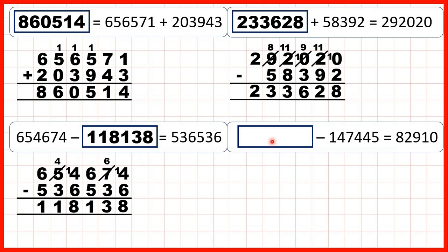Now, something minus 147,445 equals 82,910. So here we have a missing number subtraction, but this time it's the first number of our subtraction that's missing. Now remember, subtraction problems can be read backwards as addition problems. So because it's the first number of our subtraction that's missing, we need to add to find our missing number.